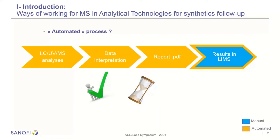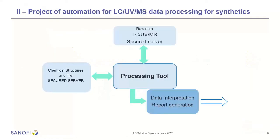So our objective was first to automate interpretation and report preparation without compromising the quality of the data interpretation. And second, we want to gain time on preparation of good quality reports in order to spend time where more expertise is needed. In other words, we would like to find an efficient tool to generate PDF reports with LC-UV-MS interpretation of raw data regarding proposed chemical structures available in a specific file share.